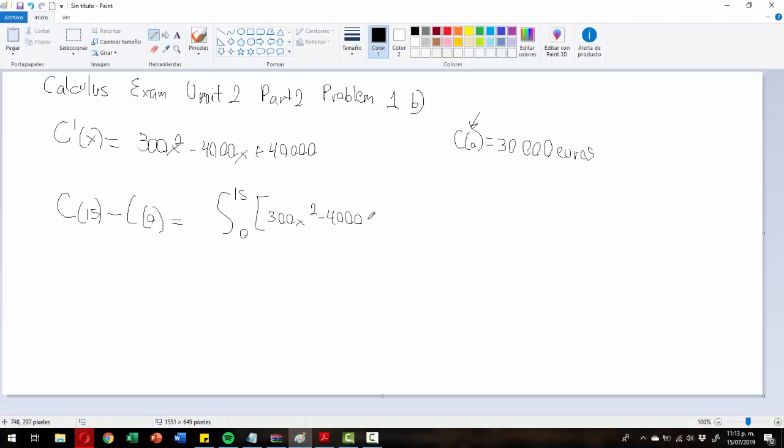Which is 300x² minus 4000x plus 40,000. So that's equal to, we already did it before, 100x³ minus 2000x² plus 40,000x. And it's going to be from zero to 15. Remember that in previous classes we always had a constant, an initial constant. So keep that in mind.